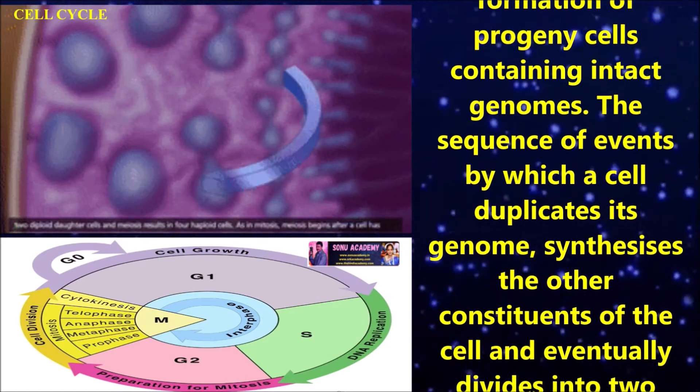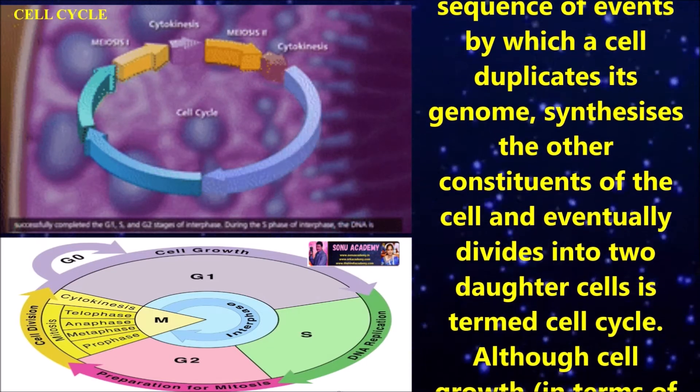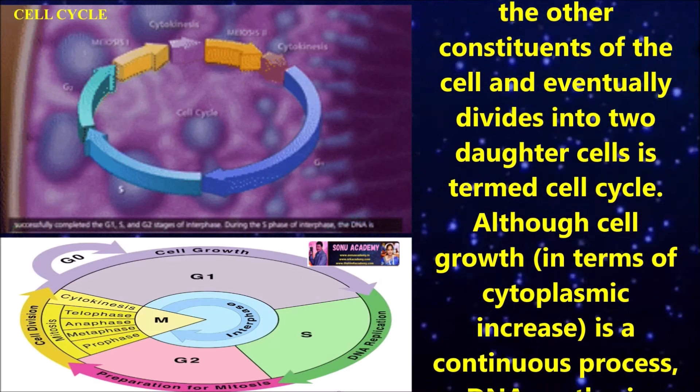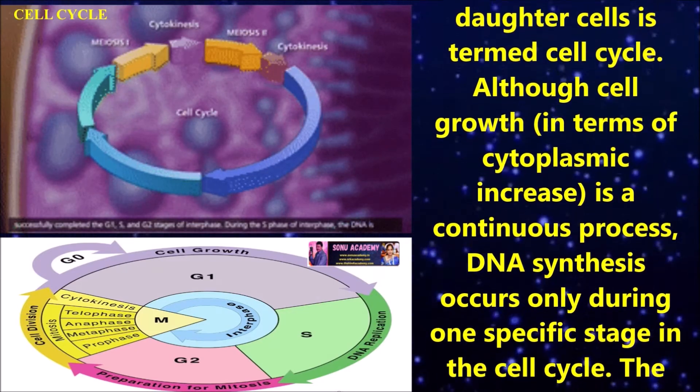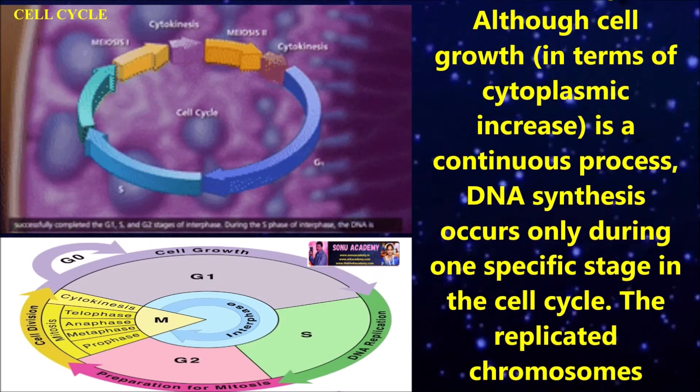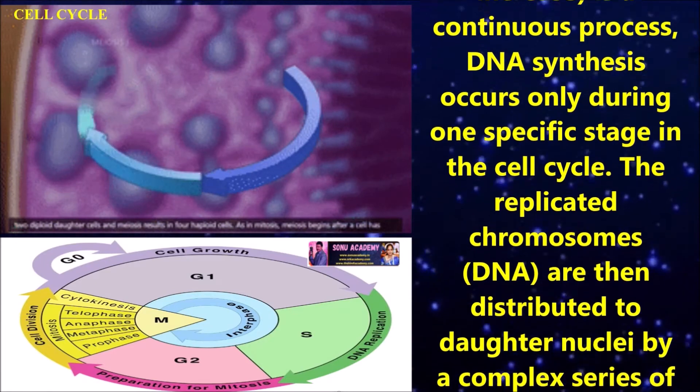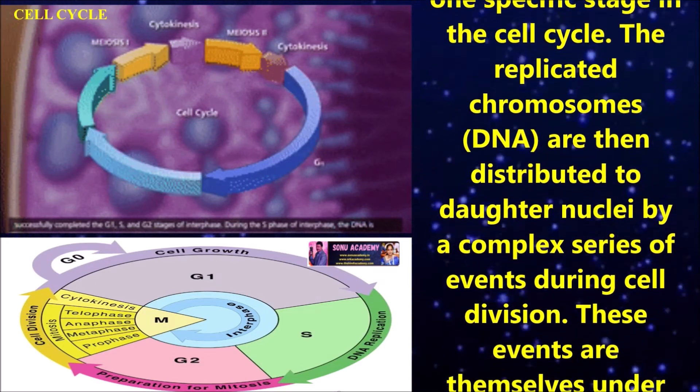The sequence of events by which a cell duplicates its genome, synthesizes the other constituents of the cell, and eventually divides into two daughter cells is termed cell cycle. Although cell growth in terms of cytoplasmic increase is a continuous process, DNA synthesis occurs only during one specific stage in the cell cycle.